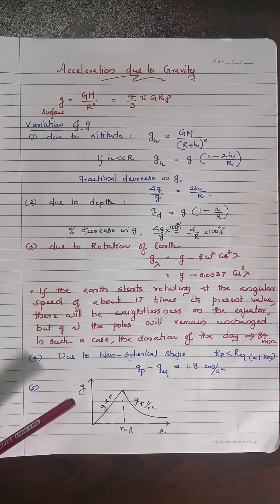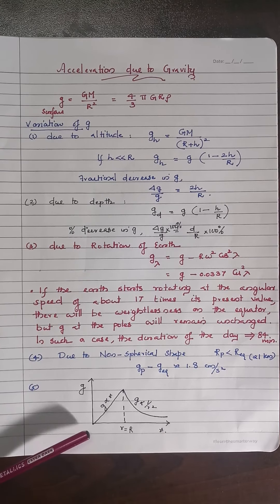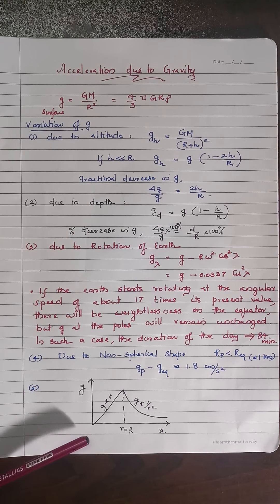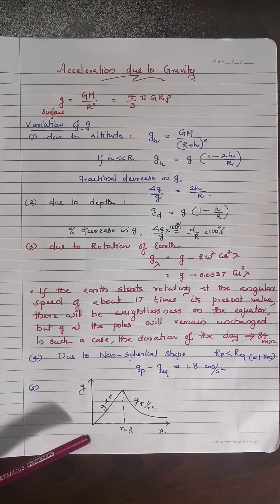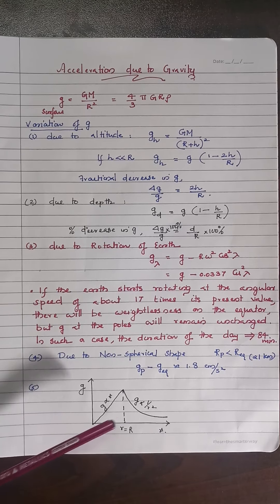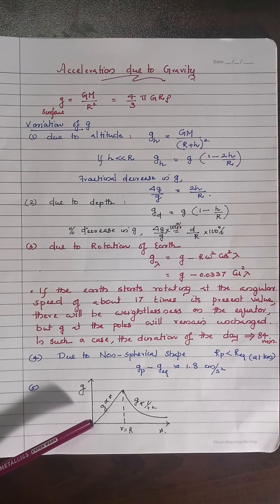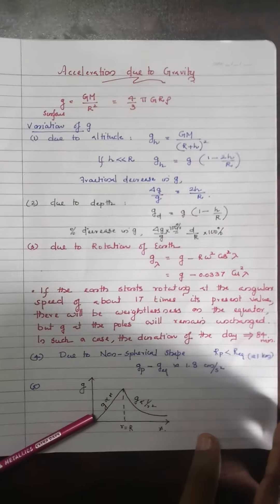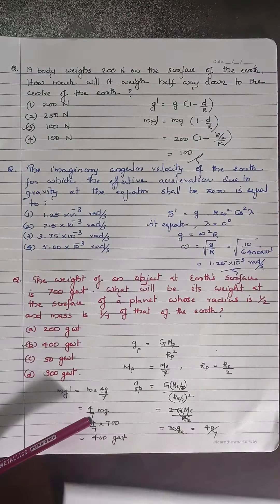For an Earth-like sphere, considering variation of g from zero radius to outside, inside the Earth g is directly proportional to r (the distance from center), and outside it follows 1/r².